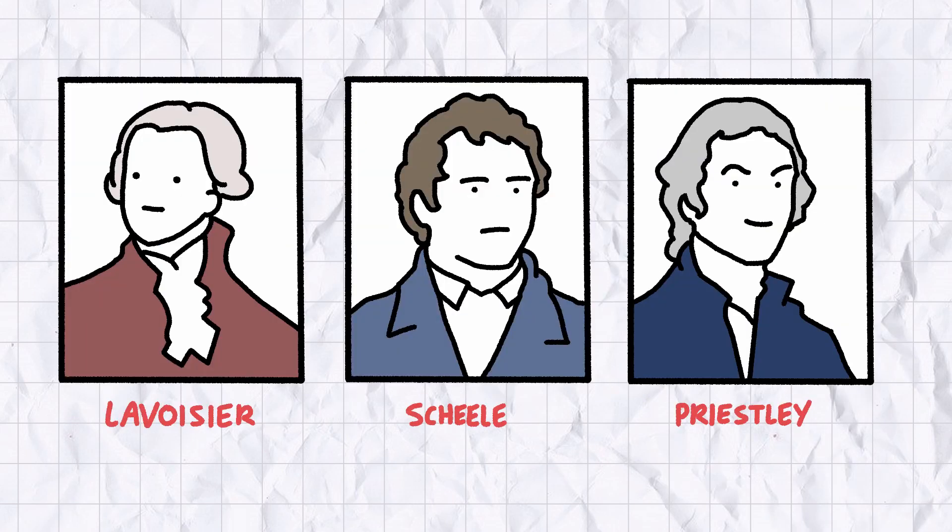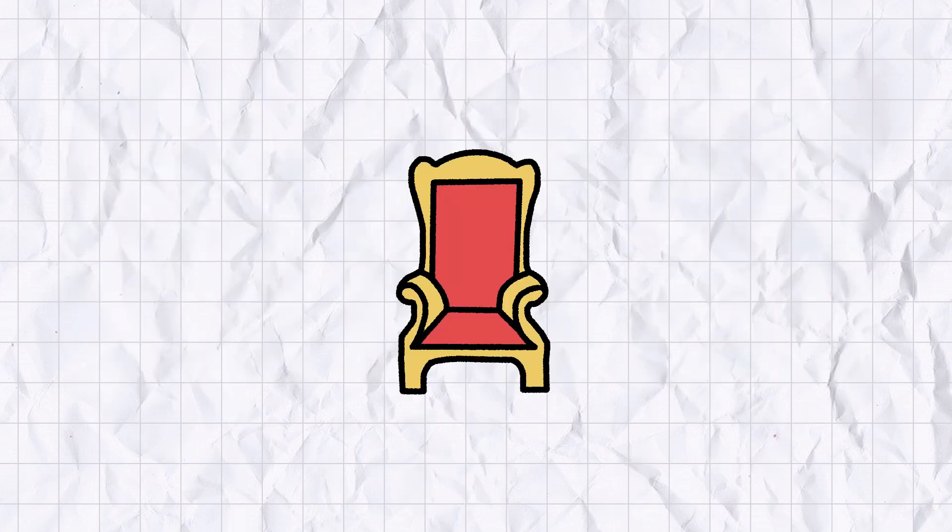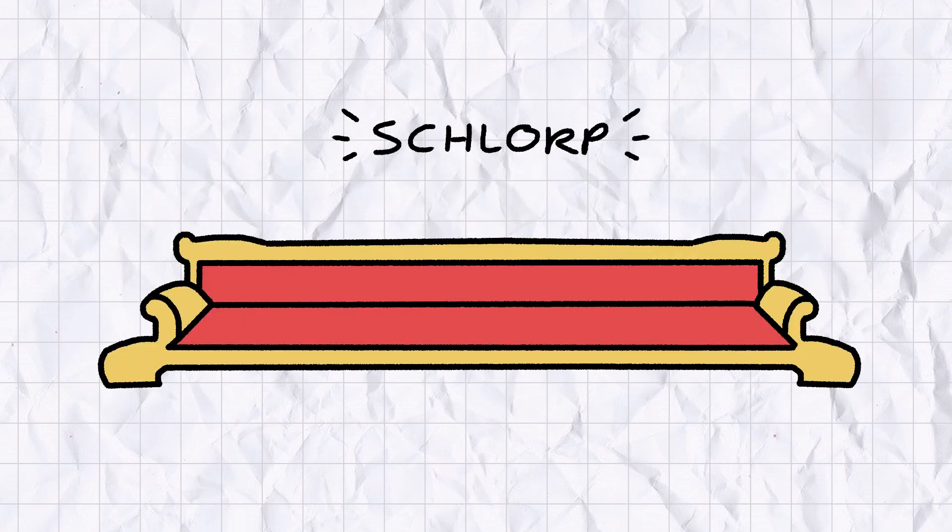So who discovered oxygen first? Well, going by publication data, it'd be Priestley. But there's evidence to suggest that Scheele conducted his experiments up to two years before he went to the press, which would make him the true discoverer. But Priestley was the first to publish, and Lavoisier was the first to get it right about oxygen's true chemistry. So who knows? Maybe we can stretch out the throne three ways, like a chaise longue or one of those three-seater bicycles from The Goodies.